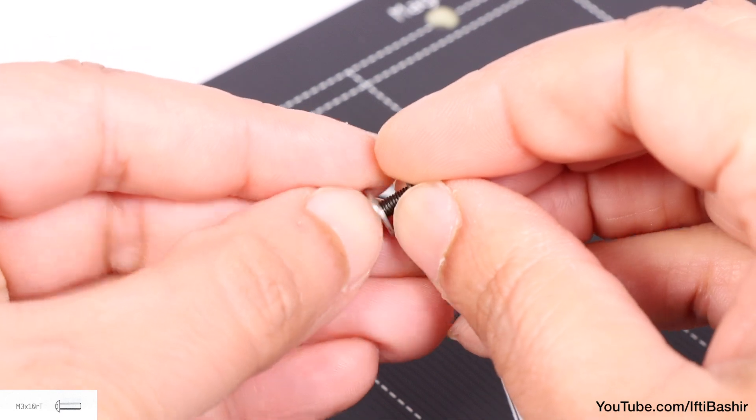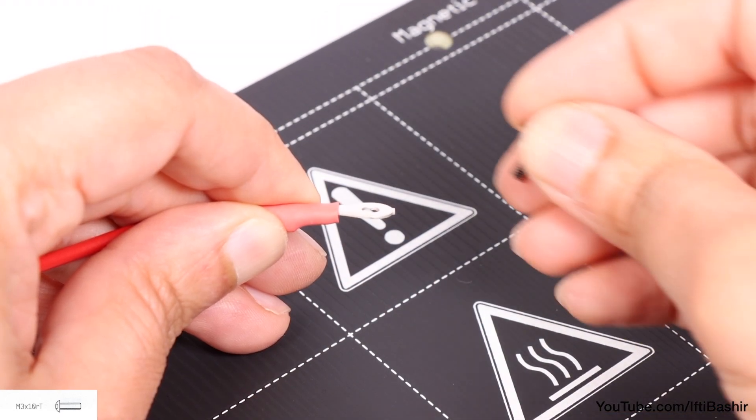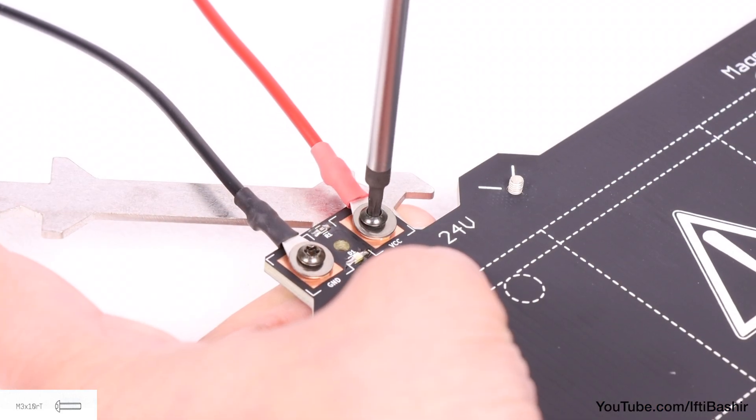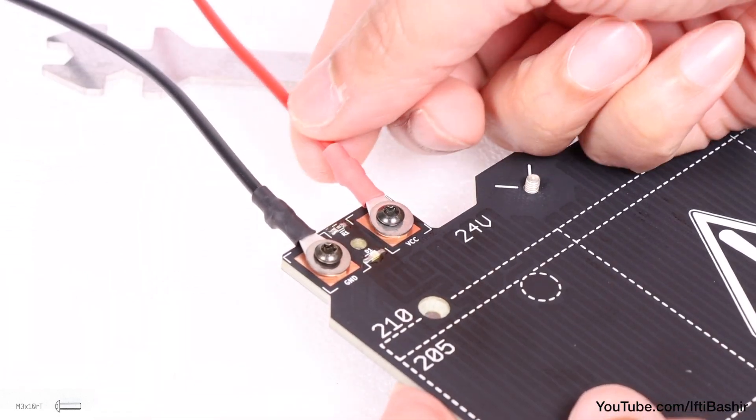Repeat the same with the red cable. M3 by 10 screw complete with washer, keeping the flat side of the connector at the top and secure with an M3 lock nut onto the VCC terminal. Again, just loosely for now.